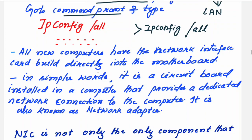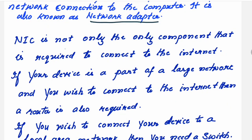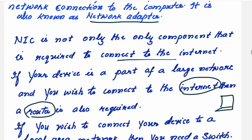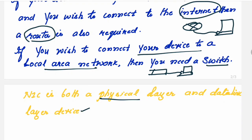All new computers have the NIC built directly into the motherboard. In simpler words, it is a circuit board installed in a computer that provides a dedicated network connection — also known as a network adapter. The NIC is not the only component required to connect to the internet; if you wish to connect to the internet, a router is required. If you wish to connect to a LAN, a switch is sufficient. The NIC operates at both the physical layer and the data link layer.